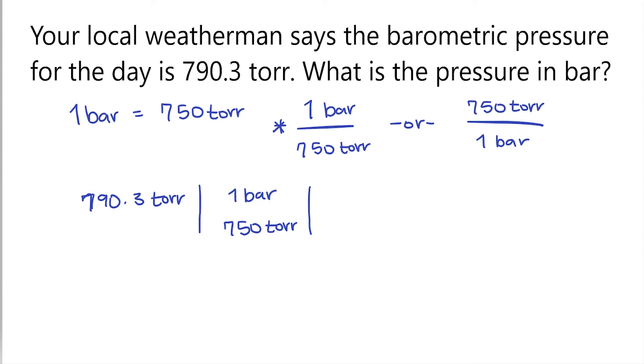So now let's go ahead and solve this question. So we need to multiply our tops and then our bottom. So we have 790.3 times 1, which is still just 790.3.